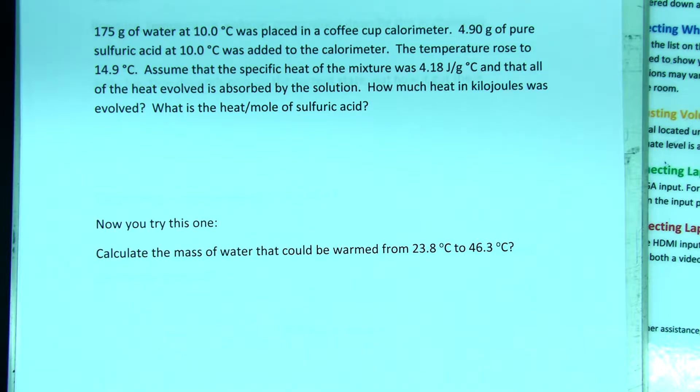Temperature went up to 14.9 degrees C. Assume the specific heat of the mixture is 4.18 joules per gram degree C. All the heat goes into the solution. How much heat was evolved? And what's the heat per mole of sulfuric acid?